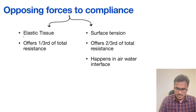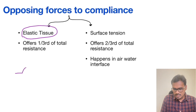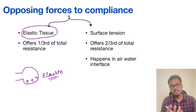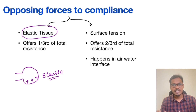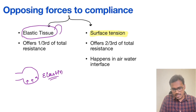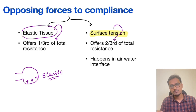Now let's look at the opposing forces of compliance. The elastic tissue in the alveoli opposes distension and tries to cause collapse — this elastin present in the lung tissue opposes compliance. Additionally, the lung has one more opposing force: surface tension. From the values, the elastic tissue offers only one third of the total resistance, whereas surface tension offers two thirds, meaning surface tension is the major force opposing compliance and trying to collapse the lung.